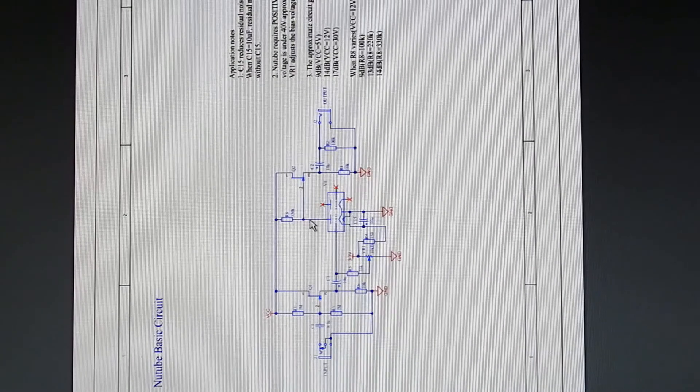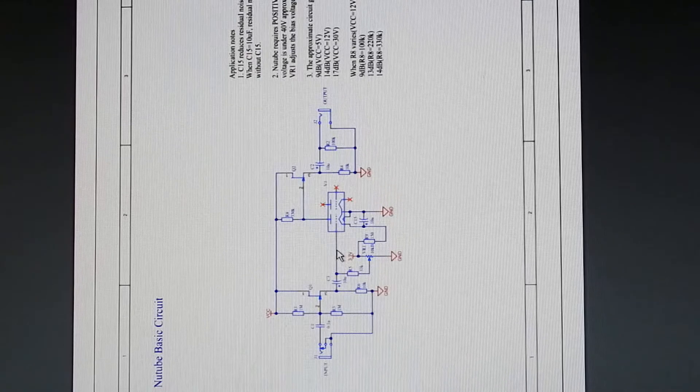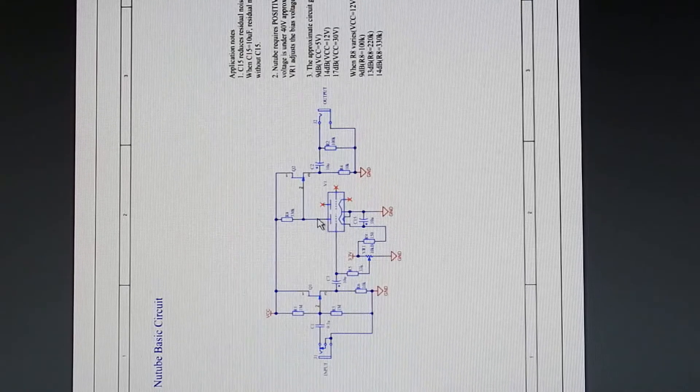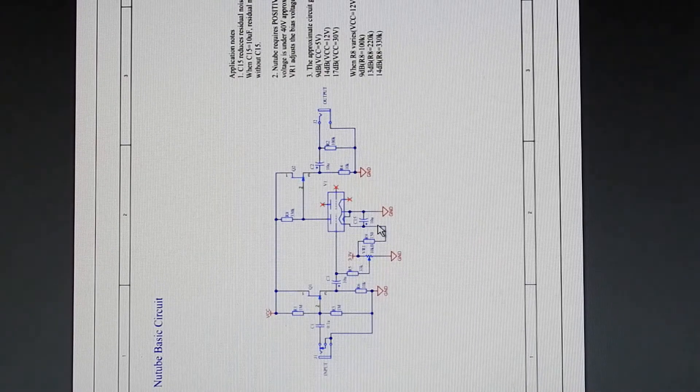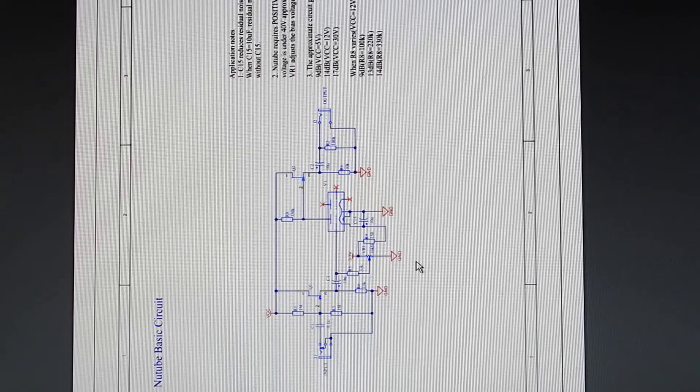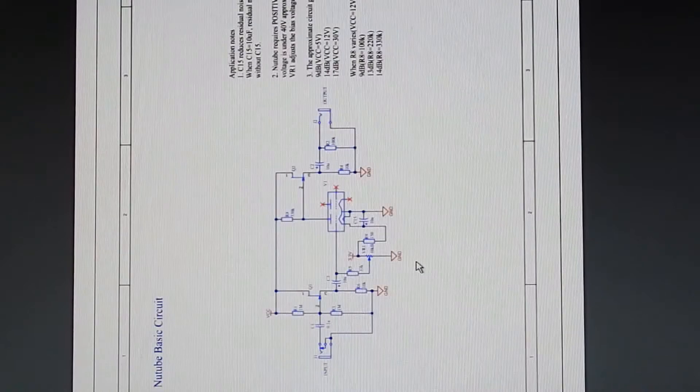I could just probably solder a wire from here to here. Cut the tube out and solder a wire from here to here. And this circuit probably wouldn't be that much different. Except I'd have less distortion. It wouldn't have the tube sound. So yeah, you can see my problem with this.